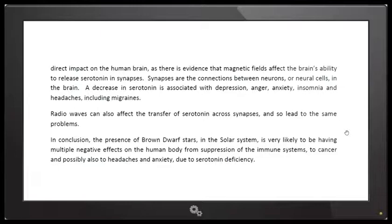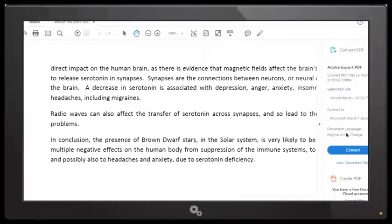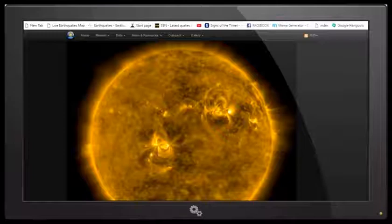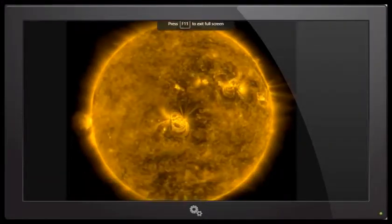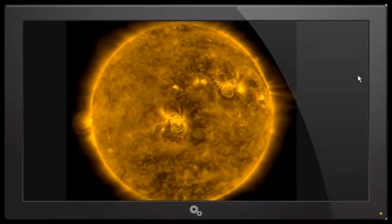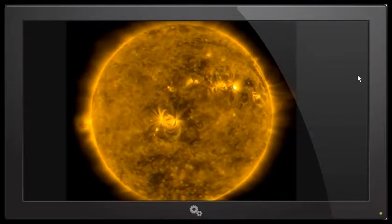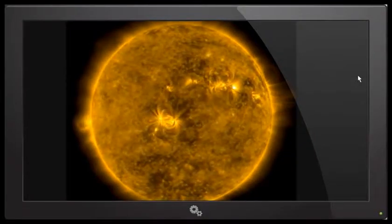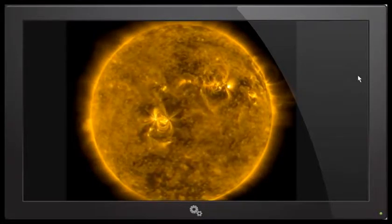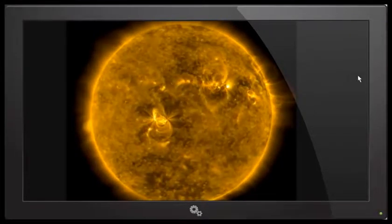In conclusion, the presence of a brown dwarf star or stars in the solar system is very likely to be having multiple negative effects on the human body from suppression of the immune systems to cancer and possibly also to headaches and anxiety due to serotonin deficiency. And ladies and gentlemen, there are probably numerous other health effects to the human body that we don't know about. But the bottom line is our bodies absorbing any type of this cosmic radiation or this increased solar radiation impacting the earth because of what is happening on our sun. This is very detrimental to our health.